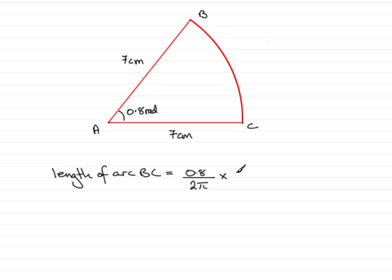You should know that the circumference of the circle is 2π times the radius. 2π times the radius and the radius is 7.